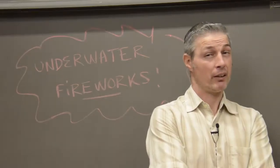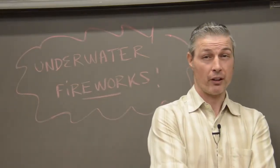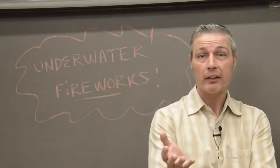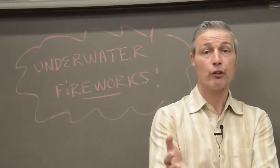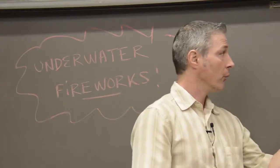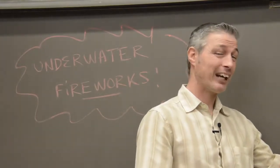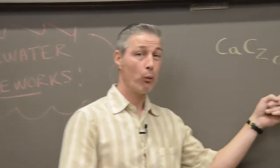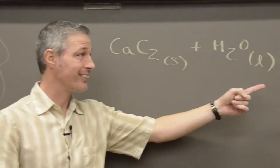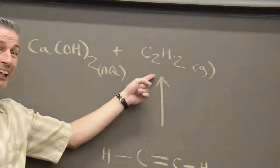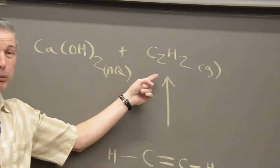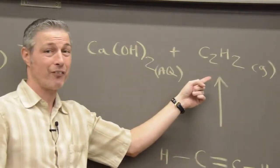Acetylene used to be used for light sources before electricity, for things like lighthouses and beacons. Cave explorers and miners still use it. What you do is take this stuff called calcium carbide and put it in water. It generates acetylene, which is this molecule right here. It's a very reactive molecule that burns,